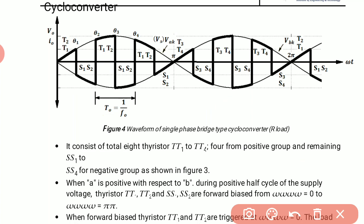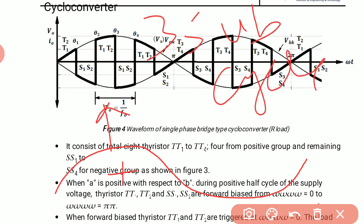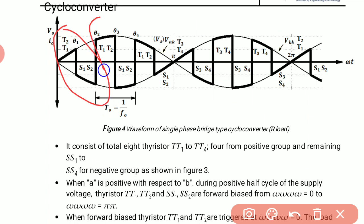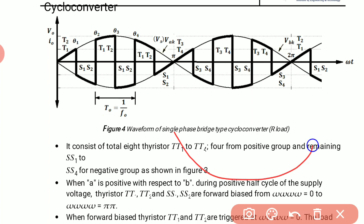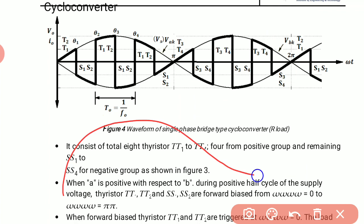In this waveform we can also observe that during the positive half cycle, the full positive half cycle is broken down into three sub-cycles: cycle number one, cycle number two, and cycle number three. Similarly, during the negative half cycle, the full negative half cycle is also broken down into three sub-cycles: cycle number one, cycle number two, and cycle number three.